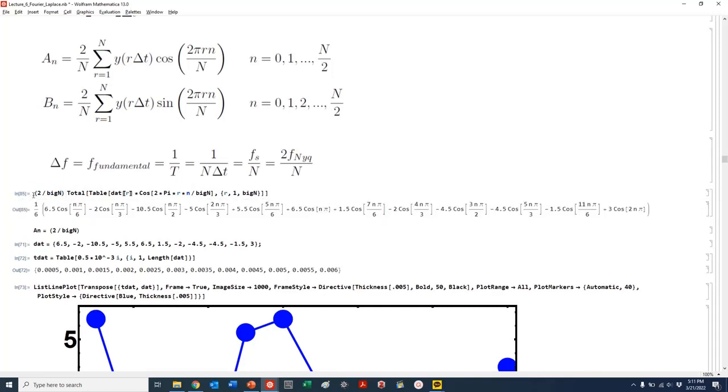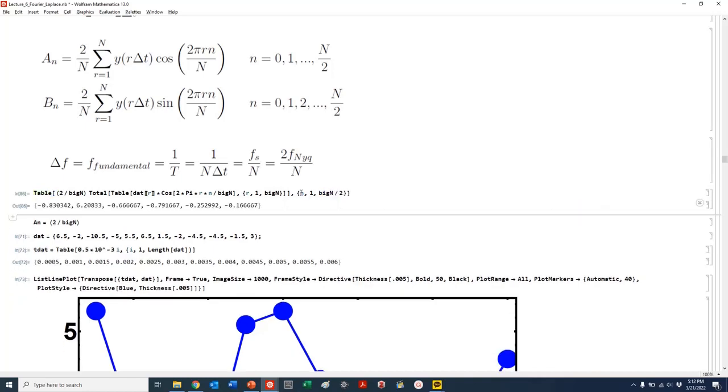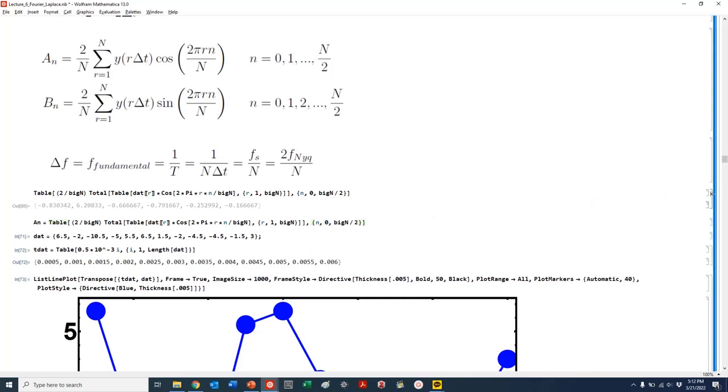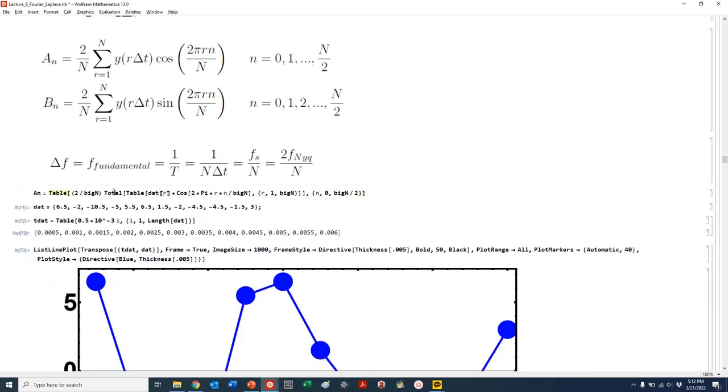And we're going to loop that from R goes from 1 to big N. And then we are going to total that. And then we are going to multiply that times 2 over big N here. And then we'll now do a table where we can then go from N comma 1 to basically big N divided by 2. And so this would be our a sub n. And the only thing we would change here, and we could go from 0, let's start from 0. Let's start from 0 here. That would be our a sub n right here.